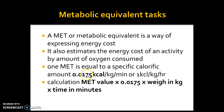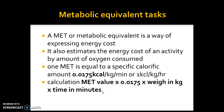1 MET is equal to a specific calorific amount: 0.0175. This figure is really important. That MET value of 1 equals 0.0175, and you're going to use that a lot. You take that MET value, multiply it by your weight in kilograms, then multiply by the time in minutes of the activity, to get the metabolic equivalent task value.